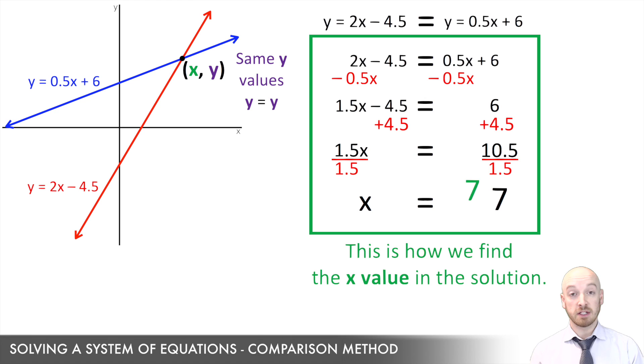Now what I have here is that one specific x value that works in both equations, and it's going to pair with a very specific y value to form the solution to this system of equations. Now the burning question is, if that's the x value in the solution, how do I find that y value?